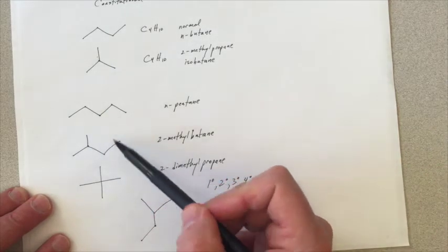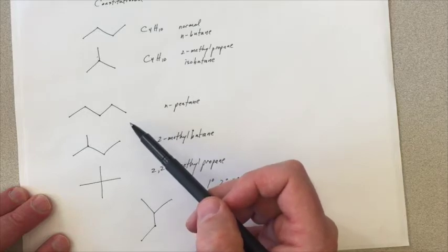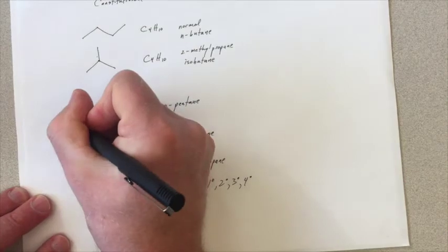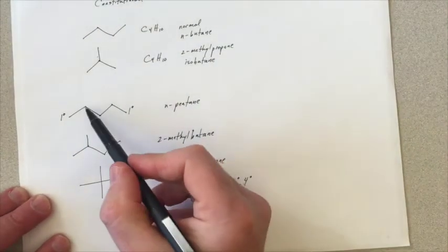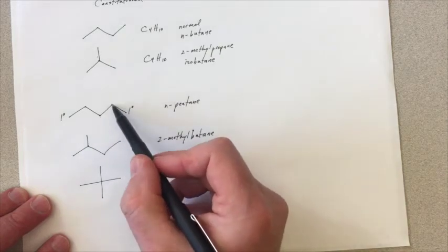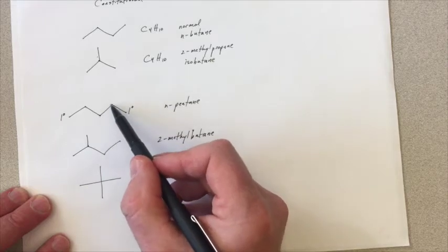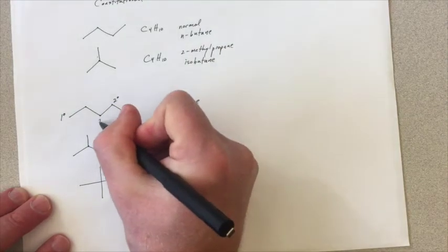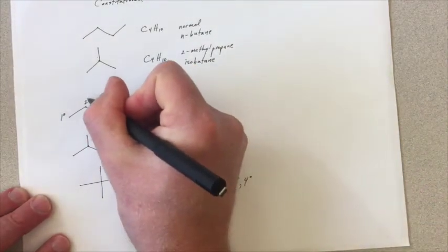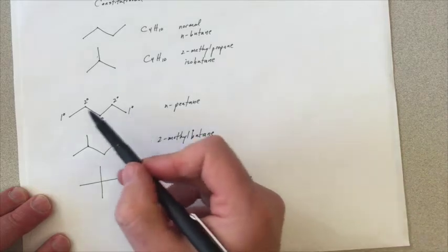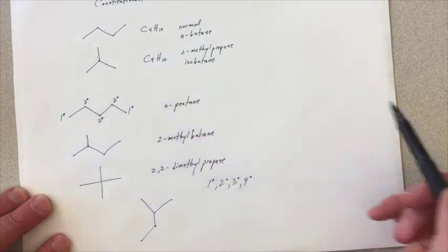So let's look at our normal pentane and start labeling these carbons as primary, secondary, tertiary, quaternary. Here's a terminal carbon. It's only bound to one other carbon, so it's a primary carbon. And the same goes for the other terminal carbon. These three carbons in the middle, each of them are bound to two other carbons. So this carbon is bound to this carbon and to that carbon. It's bound to two carbons, makes it secondary. The same with this central carbon, and the same with this one. So if we look at this constitutional isomer of n-pentane, it's got two primary carbons and three secondary carbons.